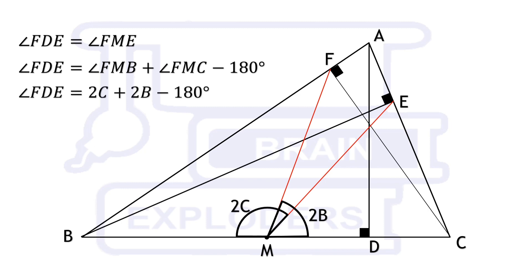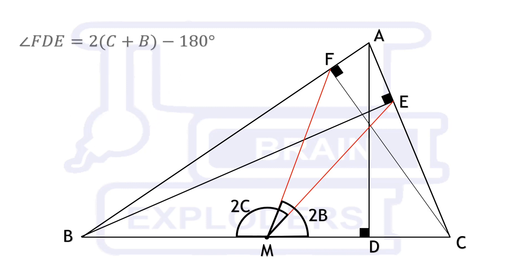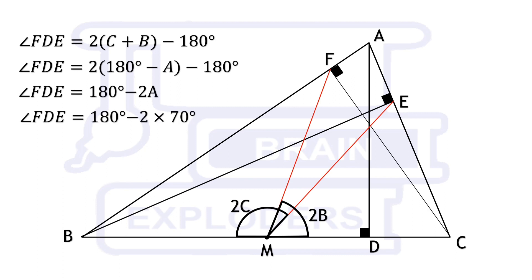On further solving, we get angle FDE equals 180 degrees minus 2A. Angle A is given equal to 70 degrees. Finally, we have angle FDE equals 40 degrees.